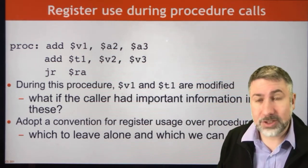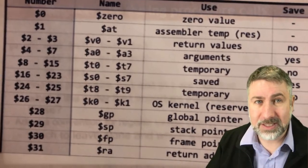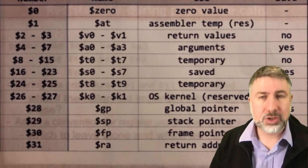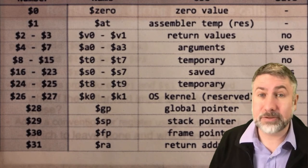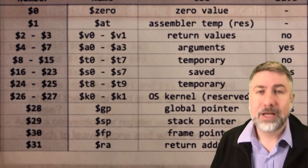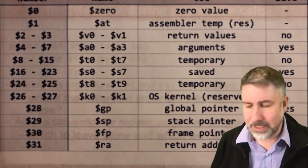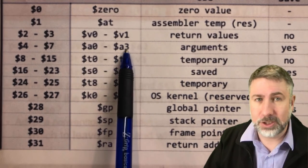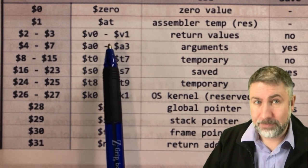So this is in fact what we do. The arguments we expect to stay the same — when we send an argument to a procedure we expect that argument will not change. The return values we expect will change.